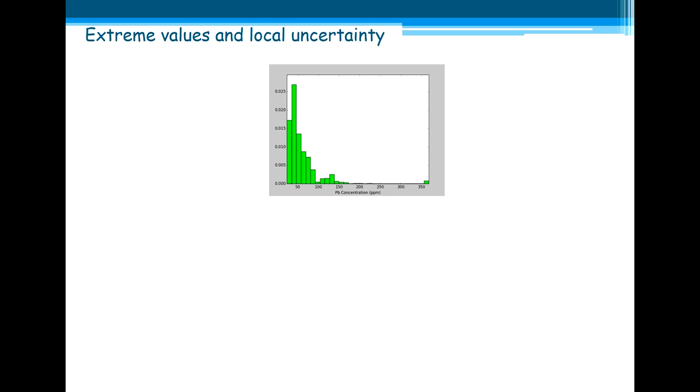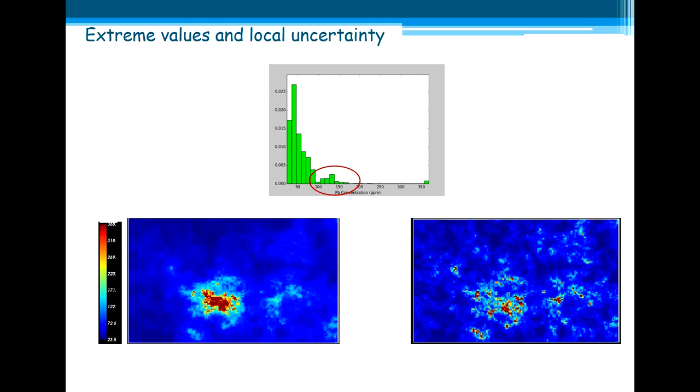For example, let's take our example of the pollutant concentration, the Pb concentration, and see these extreme values, how they are spatially dispersed. They can be spatially dispersed like this one here, with a pattern, a continuous pattern, or they can be dispersed like this one, like an erratic pattern, like salt and pepper.